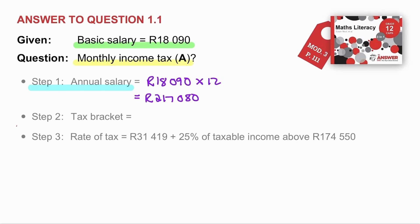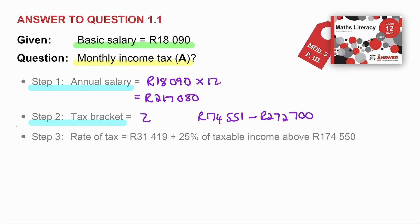Step 2: let's calculate his tax bracket. When we look at the tax table, we can see that Solly's annual salary falls within tax bracket 2.